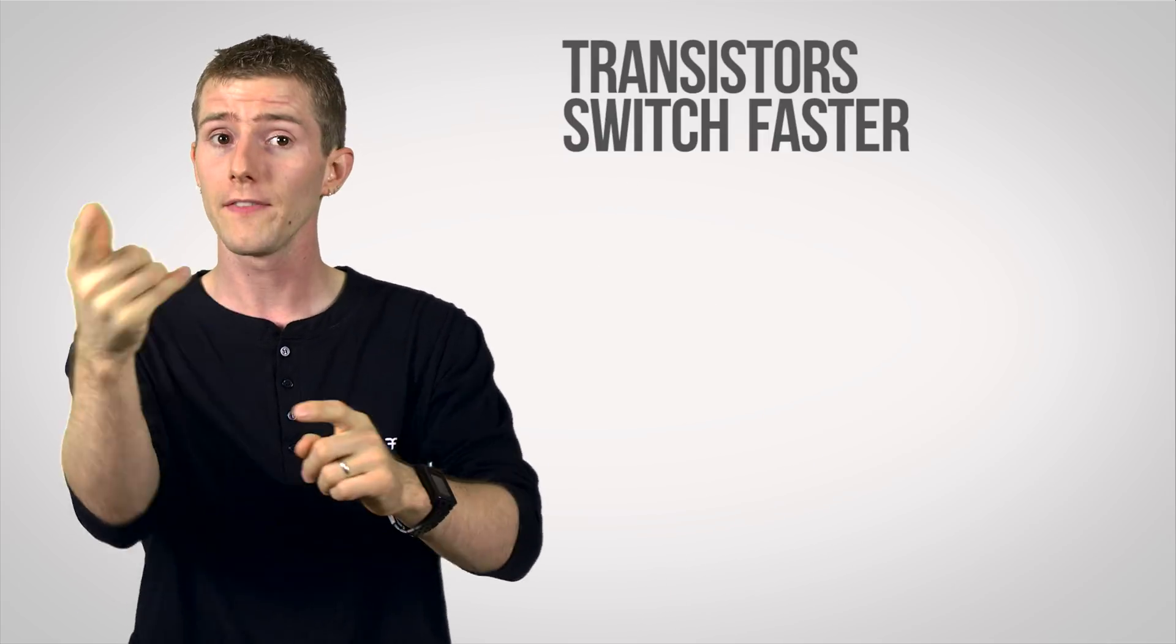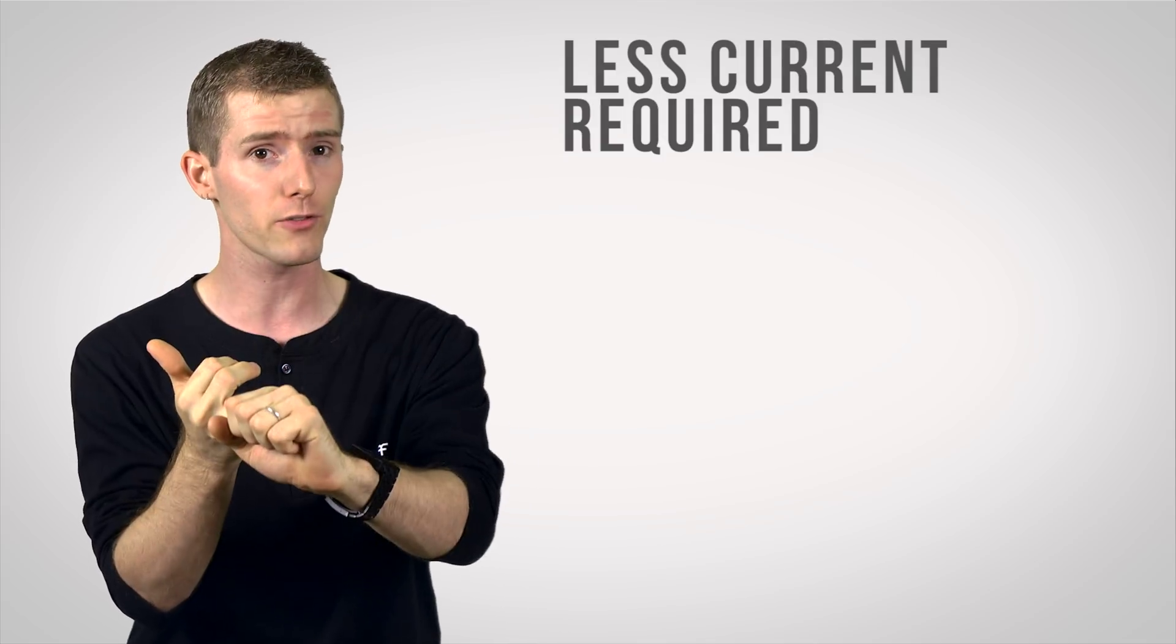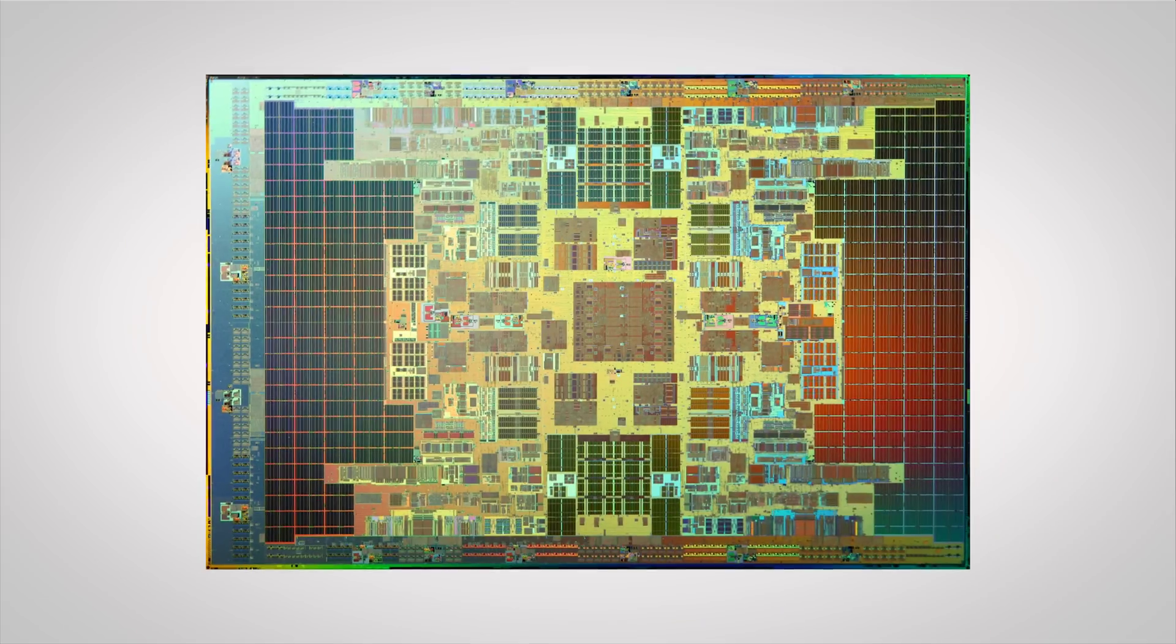We say they've moved to a new process node when this happens. There are a couple of things that usually occur: transistors switch faster, this translates to potentially higher clock speeds and performance; less current is required for transistor switching, which translates into reduced power consumption.